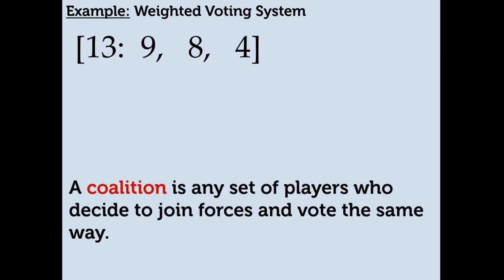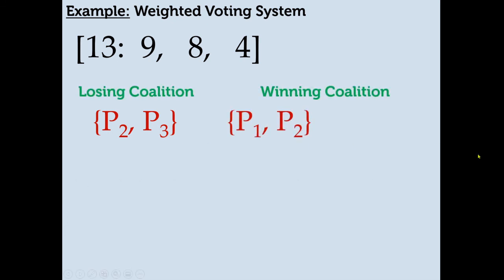The first terminology you need to know is a coalition. A coalition is any set of players who decide to join forces and vote the same way. For example, if Player 2 and Player 3 decide to vote the same way, we denote that coalition as {P2, P3} inside braces. We have winning coalitions and losing coalitions. Player 2 and Player 3 form a losing coalition because it doesn't meet quota — 8 plus 4 does not meet quota, so 12 is not sufficient.